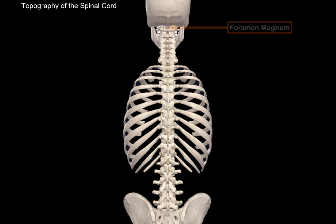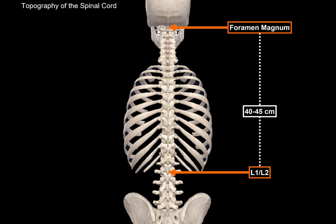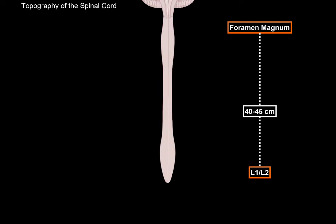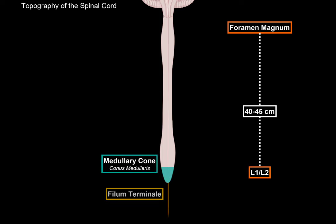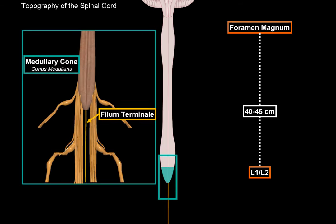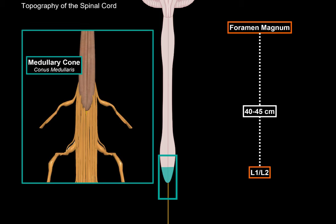The spinal cord starts at the foramen magnum, all the way to the L1-L2 vertebra region. The length of the spinal cord varies, but in general it's about 40-45 cm long. If we remove the bones, you'll see that the spinal cord ends by a structure called the medullary cone, or conus medullaris. From here, a very thin thread goes out called the filum terminale — which literally translates as a terminal thread — because it's considered a continuation of the spinal cord. The filum terminale continues downwards together with many different nerves that innervate the lower part of the body.